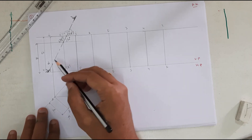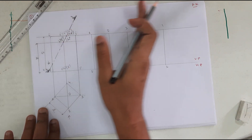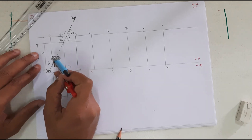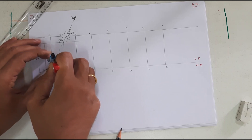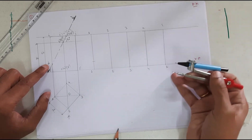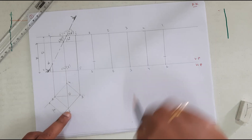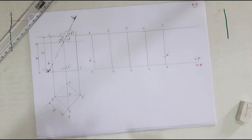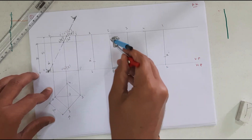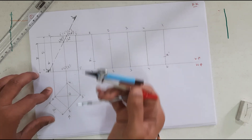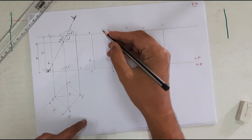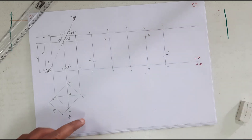Now we need to locate A', B', C', D', and E' in the development. To locate A', I take the measurement from base 1' to A' directly from the front view, because this vertical edge is in true length. I transfer this measurement between the two 1s in the development — this gives A'. Similarly, I take 2' to B' from the front view and transfer it at point 2. Since 4' to E' is equal, I mark E' at point 4. So B' and E' are also located.